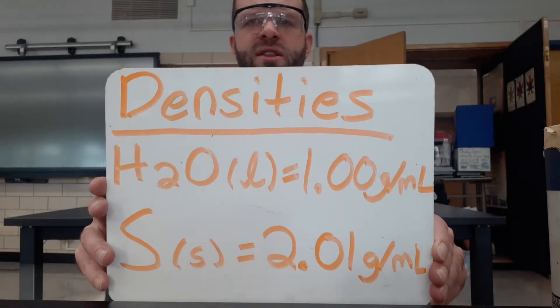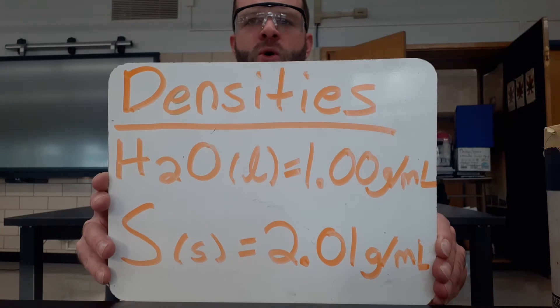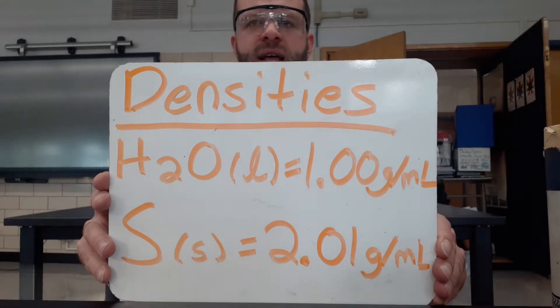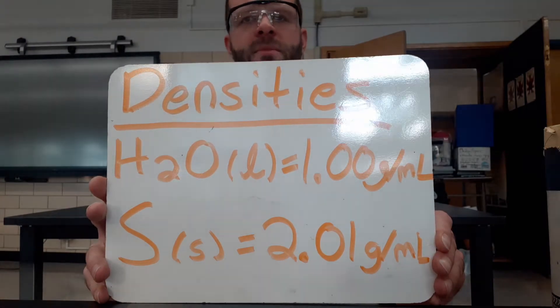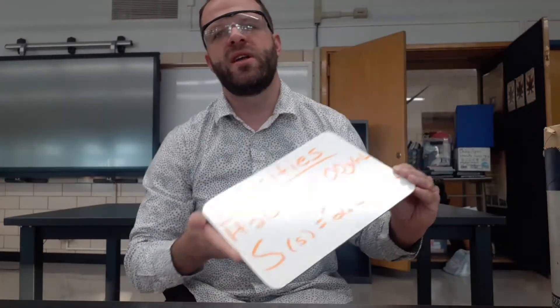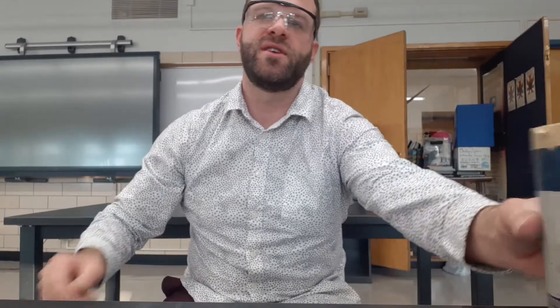Well we learned earlier this year that when you place more dense objects in lesser dense liquids they tend to sink. But something interesting happens when we place sulfur on top of the surface of water.